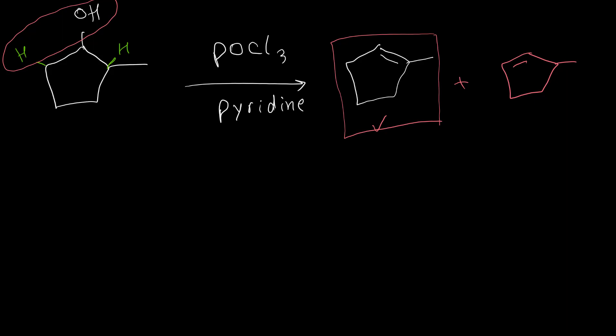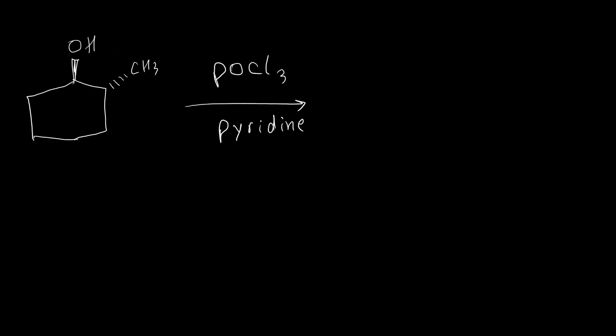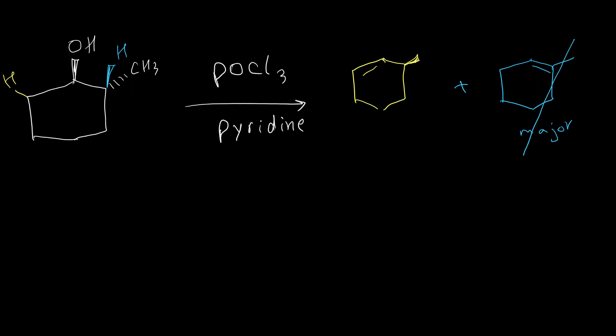For E2 reaction, hydrogens always need to be on the opposite side of the leaving group — anti-periplanar. Take a look at this example. We may think that on the right side we have one hydrogen and on the left side we also have hydrogen, so we may expect two different products. But the truth is one of these products never forms.